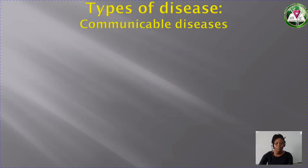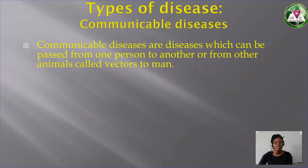What is infectious or communicable disease? Communicable diseases are diseases which can be passed from one person to another, or from other animals called vectors to man. Now what is a vector? Vectors are small animals that carry disease-causing microorganisms, like mosquito. Mosquito is a vector. It carries plasmodium, which is a causative organism — the organism that causes malaria. Mosquito carries this and transmits it to man, thereby transferring the malaria parasite.